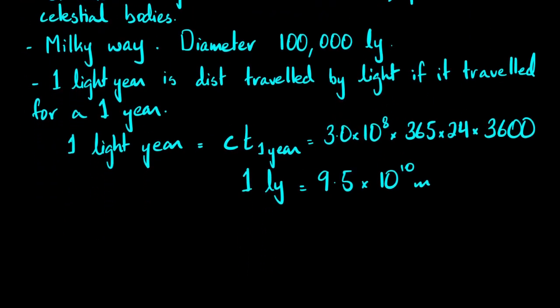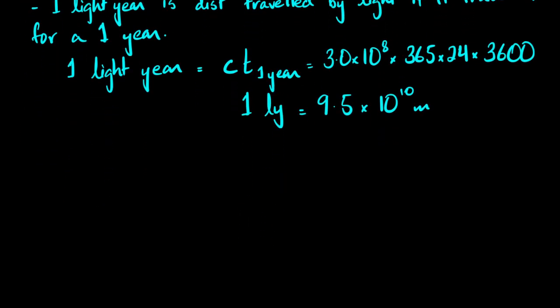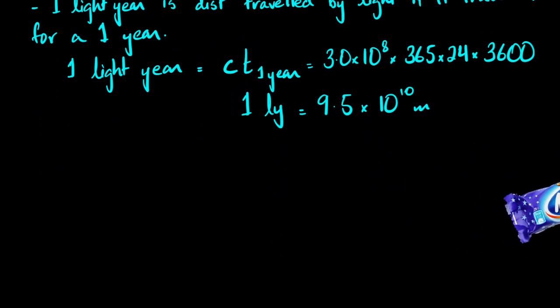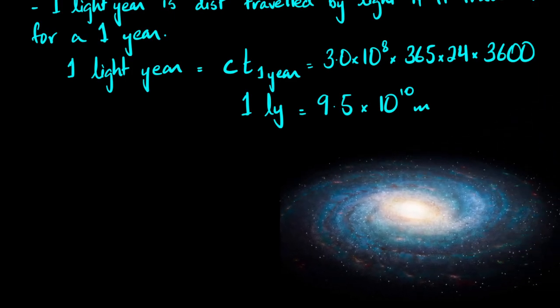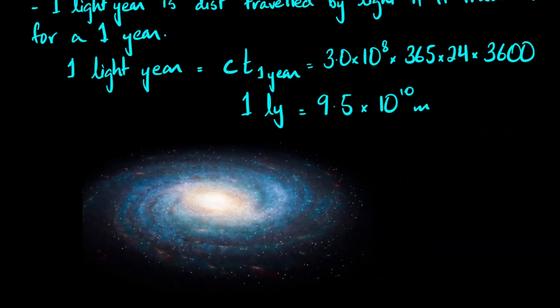Here is a picture of the Milky Way. Our solar system — the Sun, Earth, and all associated distances — is located roughly here, toward one side of the galaxy rather than at the center. All those distances pale in comparison to the full 100,000 light-year diameter of the Milky Way.